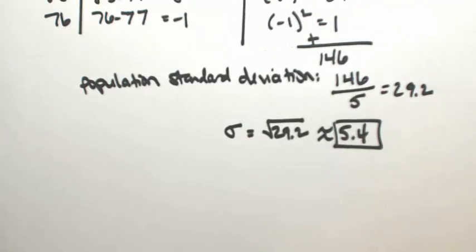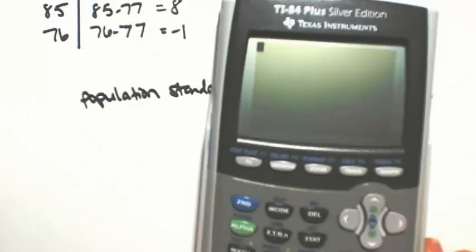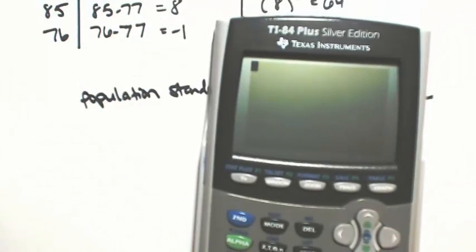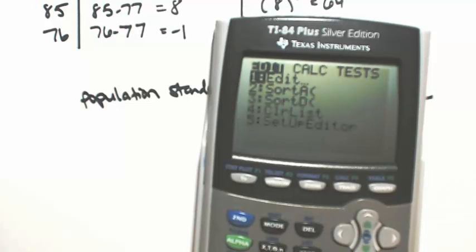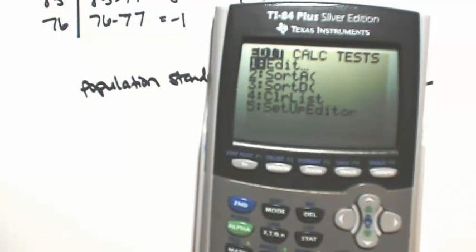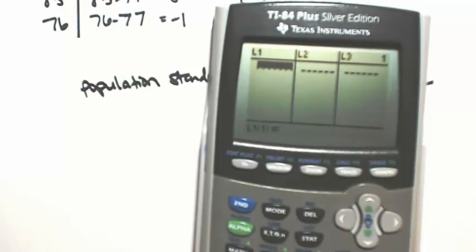I'll show you one more in case you have maybe a graphing calculator. You can use the TI-84. So kind of the same idea with the TI-30XS. You want to hit STAT. So what you want to do is put in the data. So we're going to edit our list. And then just type it in.